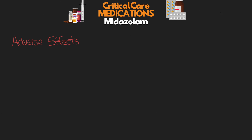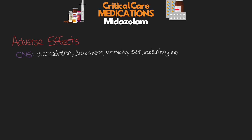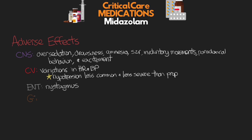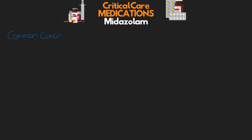For adverse effects, going system by system: in the central nervous system, potential effects include over-sedation, drowsiness, amnesia, seizures, involuntary movements, paradoxical behaviors, and excitement. For the cardiovascular system, we can see variations in heart rate and blood pressure, though hypotension is less common and typically less severe compared to propofol. For ENT, nystagmus can occur; for GI, nausea and vomiting; and for the respiratory system, the big ones are decreased respiratory rate, decreased oxygen saturation, and apnea.